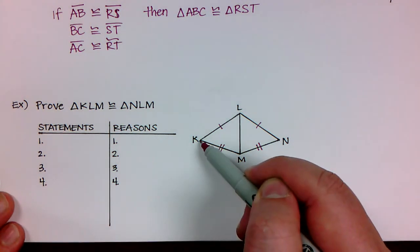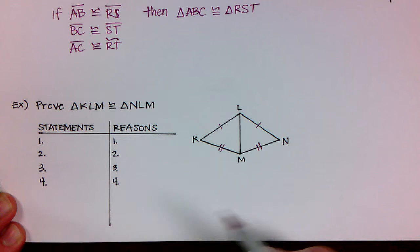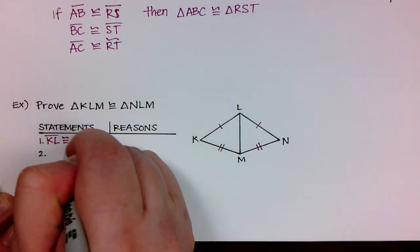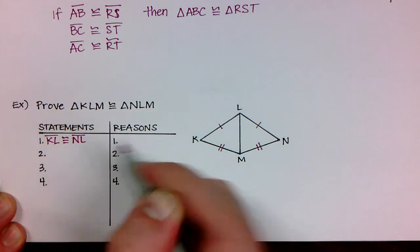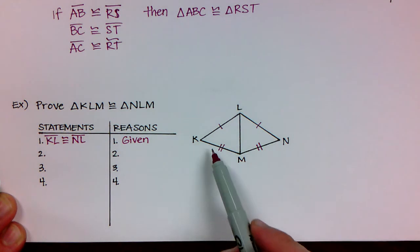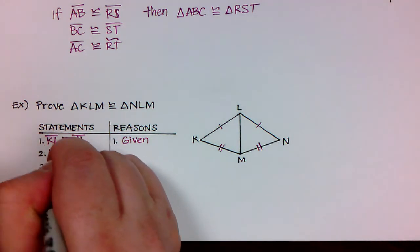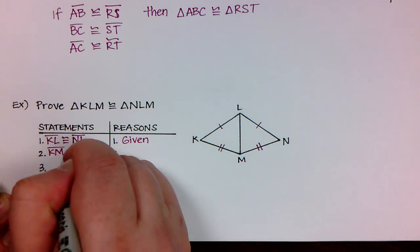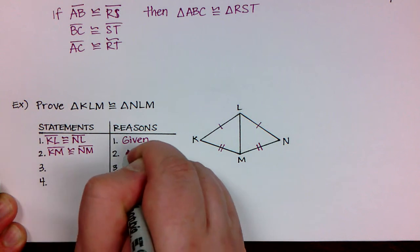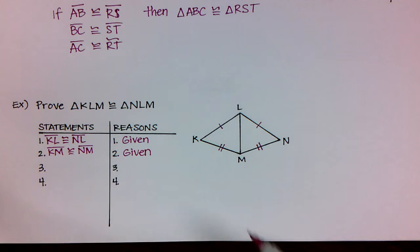From the diagram I can already see that KL is congruent to NL — this is given. I'm also given that KM is congruent to NM — this is also given. So based on Side-Side-Side, if I can show that the third side is congruent to the third side of the other triangle, then I'm done.